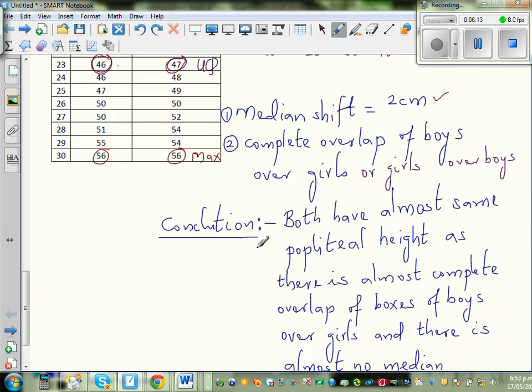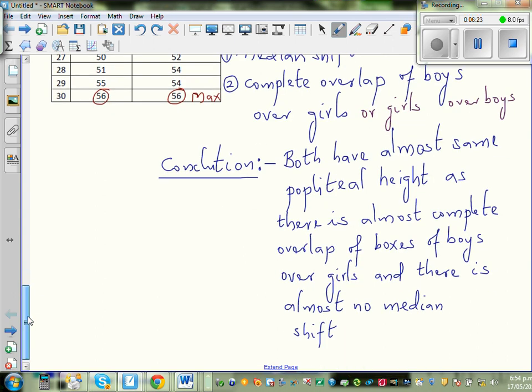So that's not important. So this is my analysis. And finally, from this analysis, I will conclude. This is my conclusion: both have almost the same popliteal height as there is almost complete overlap of boxes of boys over girls, and there is almost no median shift. They have almost the same popliteal height.